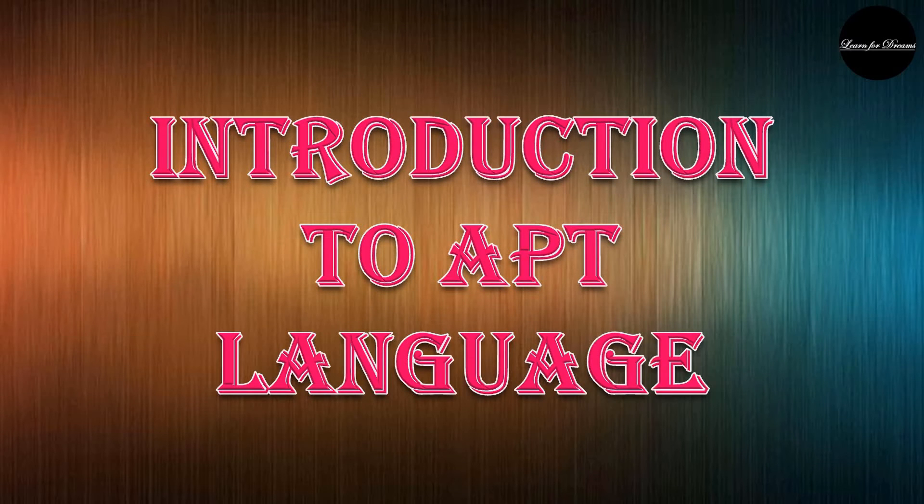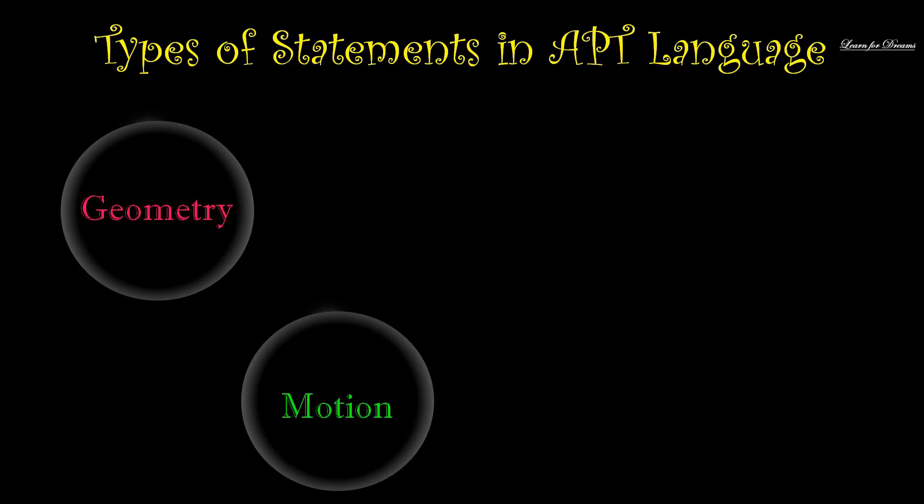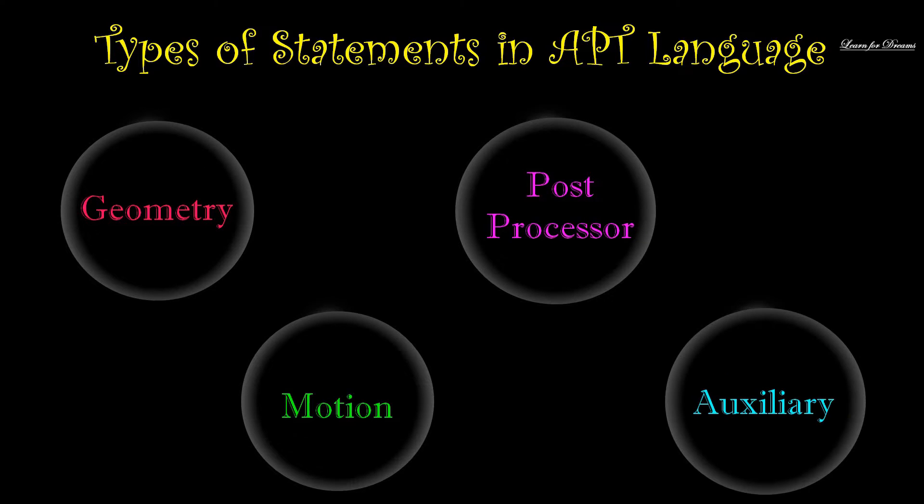Hello students and welcome back to the channel Learn for Dreams. Learn with friends, say goodbye to boredom. Today we will see introduction to APT language. Let's start with the types of statements in APT language. There are total four types of statements used: geometry statements, motion statements, post processor statements, and auxiliary statements.